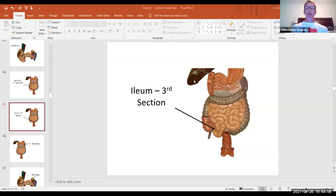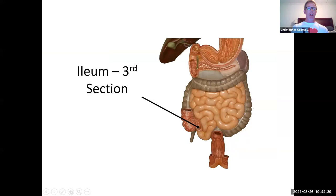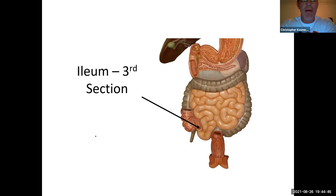Welcome to the labeling portion of our class for chapter one. Let us finish up with the chapter one introduction material. We were on the small intestine last time. There are three parts to the small intestine: the duodenum, the jejunum, and the distal or terminal portion called the ileum — I-L-E-U-M. You can see the ileum right here in our model — it's pretty much this last portion of the small intestine.